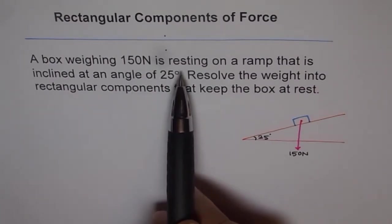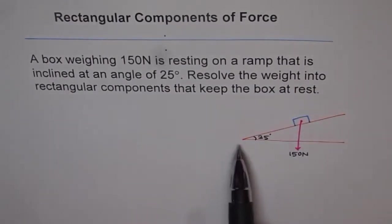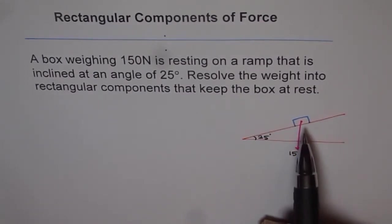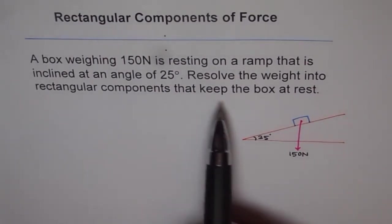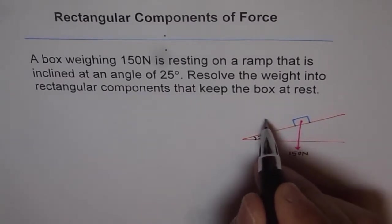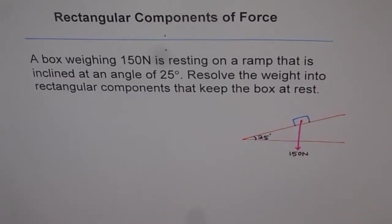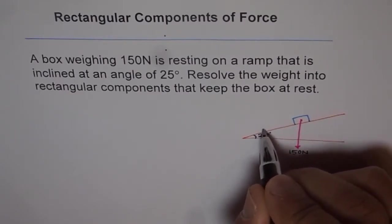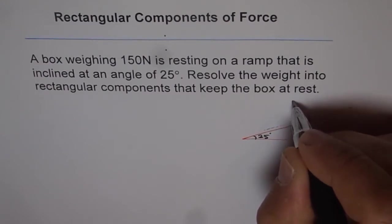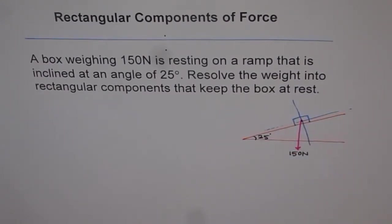A box weighing 150 newtons is resting on a ramp inclined at 25 degrees. Now resolve the weight into rectangular components that keep the box at rest. If you make rectangular components along the x and y axis it will be very difficult. Instead, we can tilt our frame and have components along the inclined plane itself. These components are rectangular — at right angles — but they are inclined, not along the horizontal x and vertical y axis.